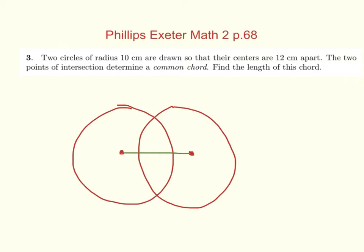I'll talk about this common chord, which goes there. So right here we have 12. And then we also have that the radius of these two circles are 10. Where do you think we should draw the radius in order to solve anything with these common chords?